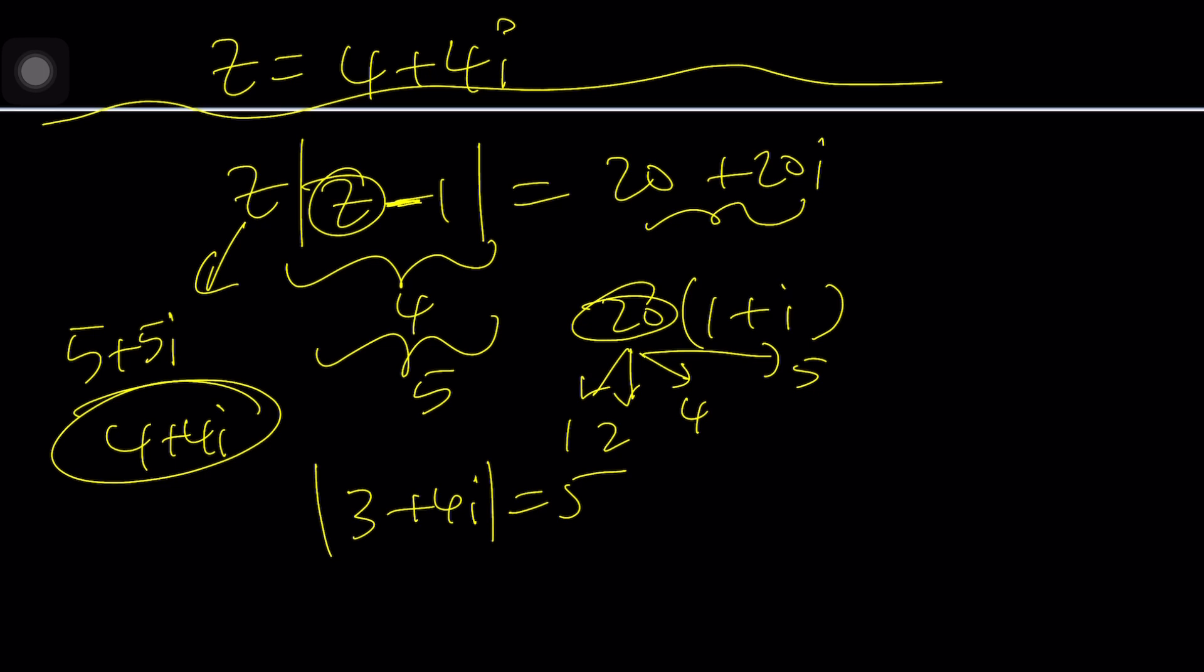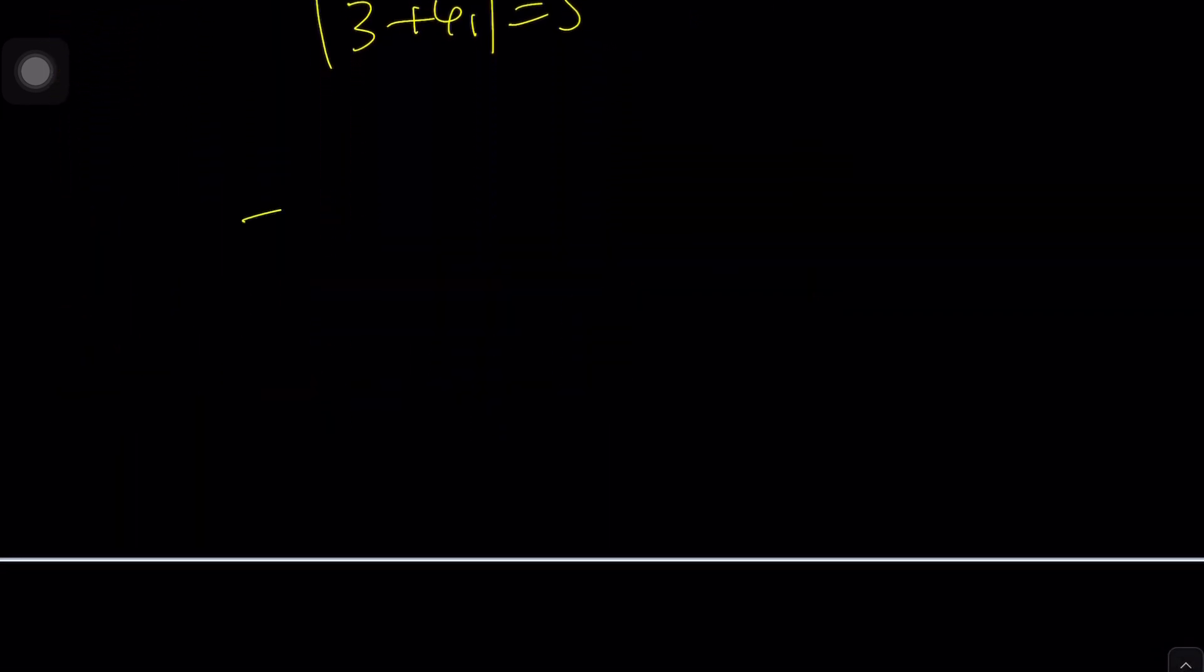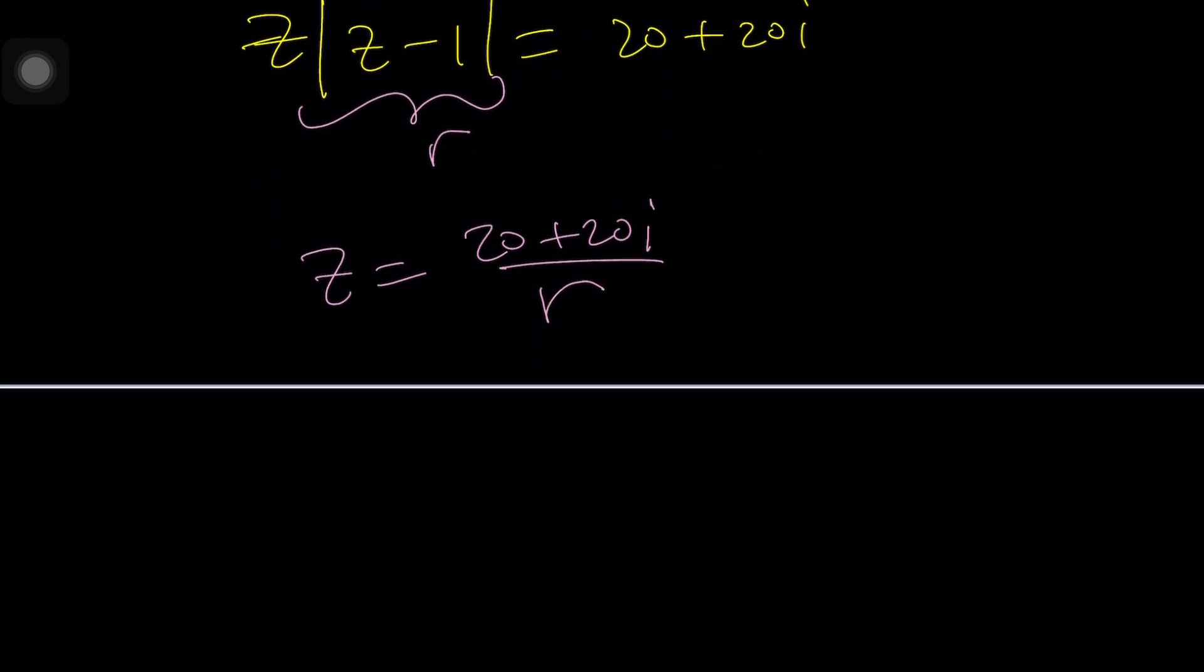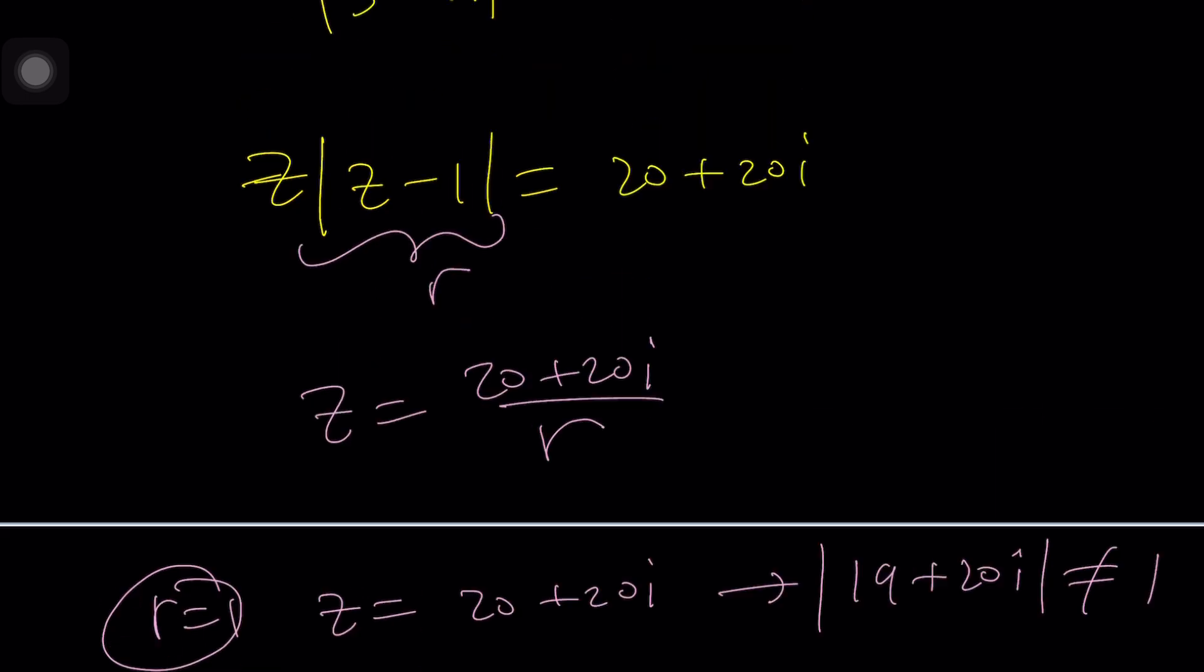So you need to find a number such that, maybe I can approach it this way, more systematically than guess and check. I can say what if this equals r and then z equals (20 + 20i)/r. So from here maybe I can say if r equals 1 then z is supposed to be 20 plus 20i but its absolute value isn't that obvious. If you subtract 1 from it, 19 plus 20i, its absolute value is not going to equal 1. So if r equals 2 and so on you can go through these cases and hopefully find a good solution at some point.